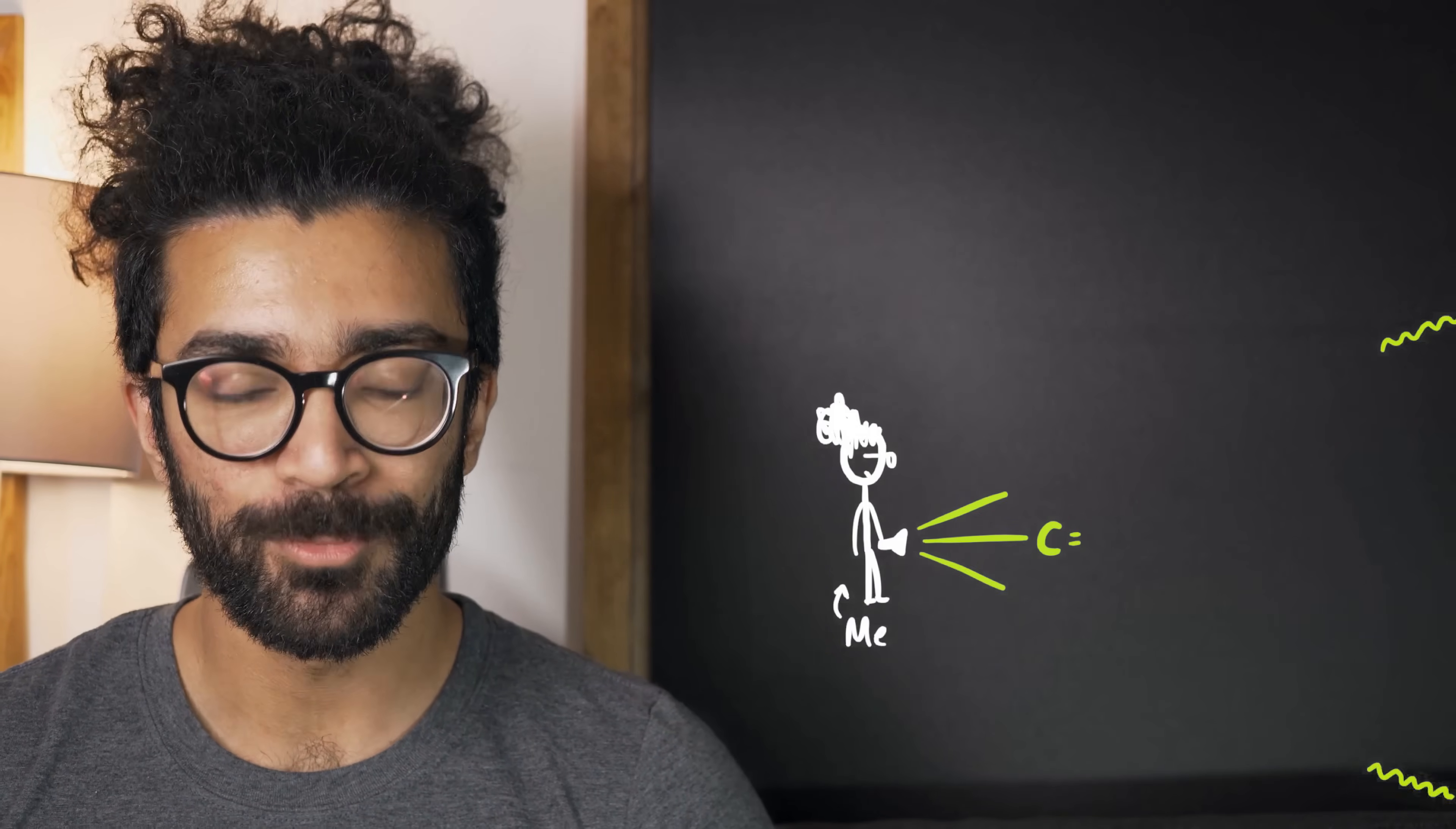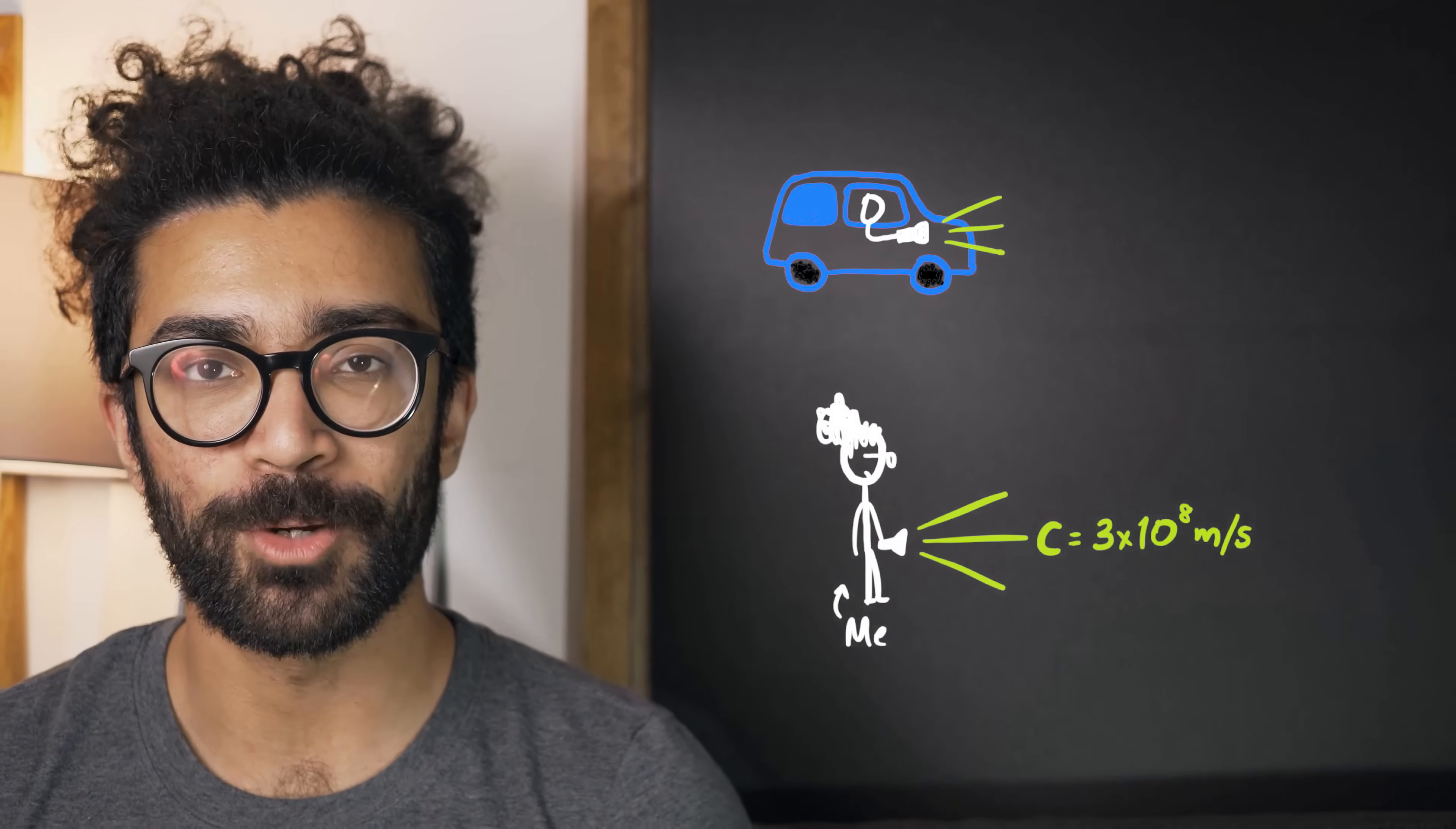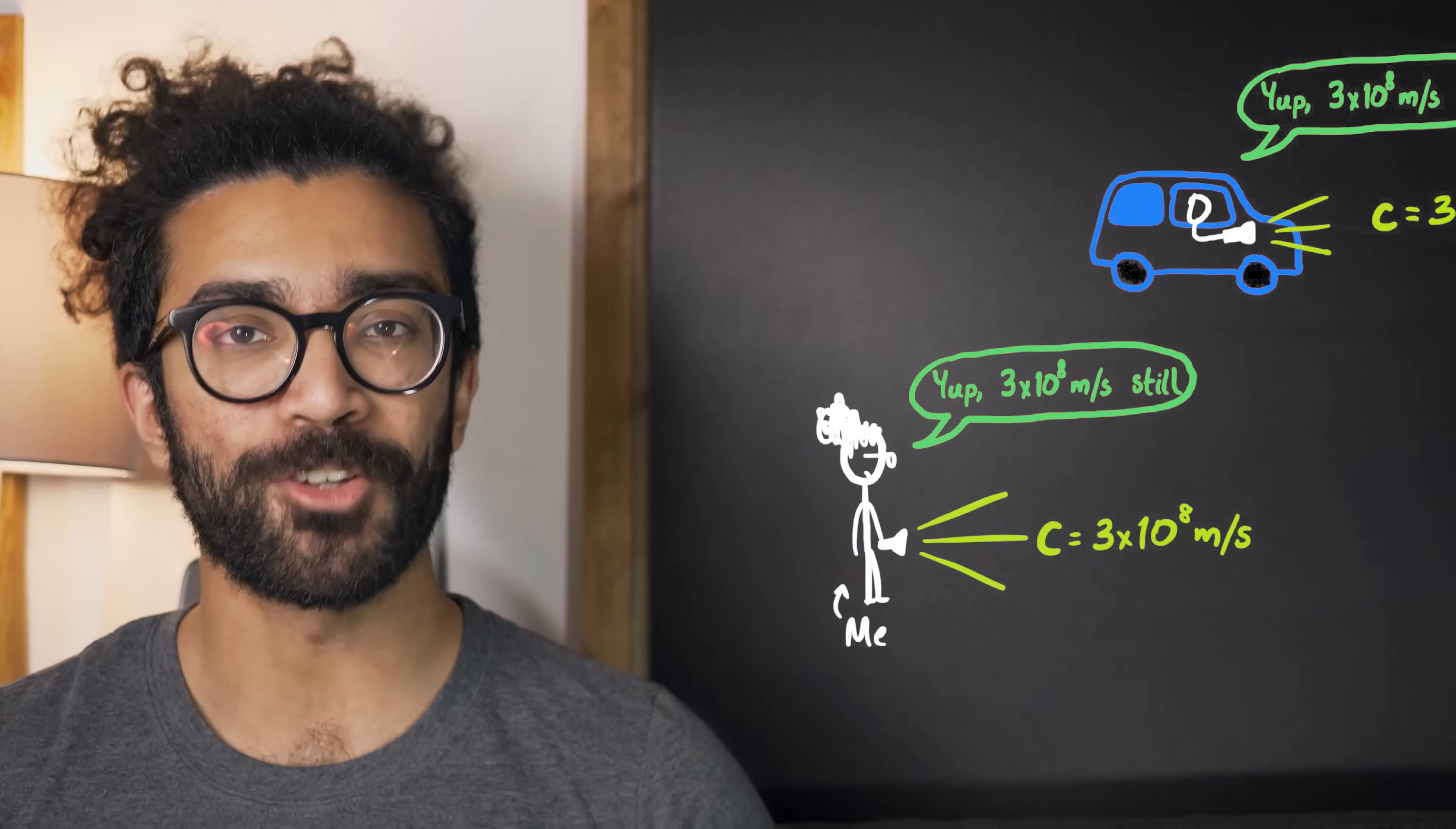If I were to measure the speed of light, it would end up being roughly 3 times 10 to the power of 8 meters per second, which we call c. But if a person were to drive past me, shining a flashlight out of the window of their car, then I would still measure the beam of light coming from their flashlight as moving at 3 times 10 to the power of 8 meters per second, and so would they.